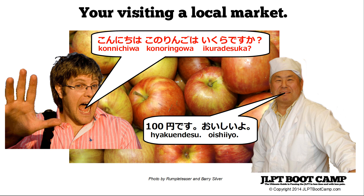The situation is that you are visiting Japan and visiting your Japanese friend. You've been in Japan for a while, so you go out to the local market to do some shopping. You bump into Ojisan and ask him how much this apple is. He replies that it's 100 yen and very delicious — he's trying to sell his apples.